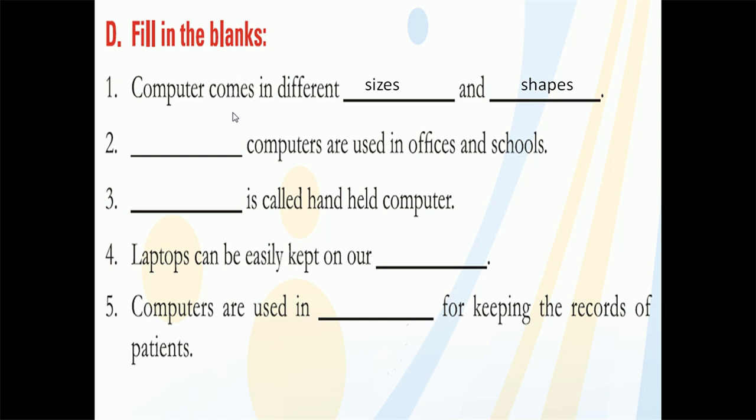Next: blank computers are used in offices and schools. In your computer lab, which type of computer do you see? Desktop computers. So the answer is desktop — mainly desktop computers are used in offices and schools.